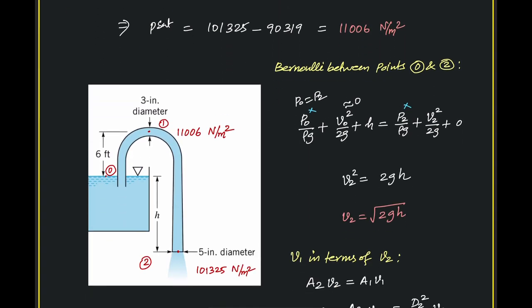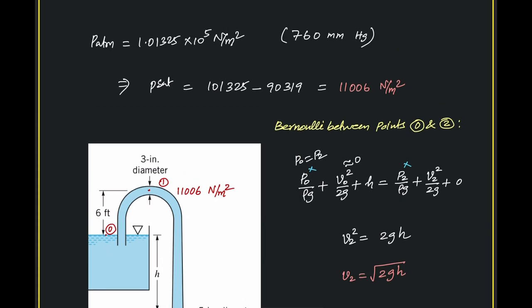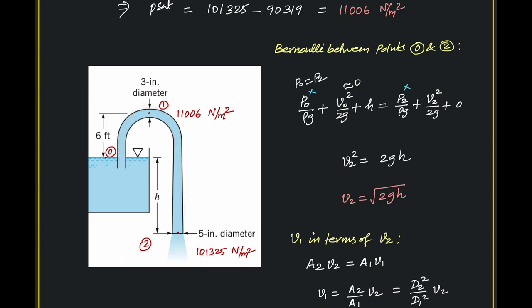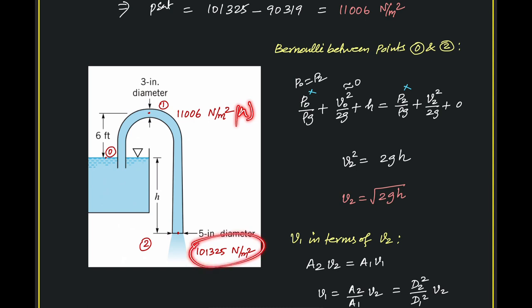Now we know the minimum pressure that should occur at any point in the siphon. For the siphon, the pressure at the inlet is atmospheric, and at the top of the siphon (point 1), the pressure will fall. If the height H exceeds a certain value, cavitation will occur because the pressure will fall below the vapor pressure. We want to find H corresponding to the pressure at point 1 equaling the vapor pressure. The pressure at the discharge (point 2) is 1.01325 × 10⁵ N/m² absolute.